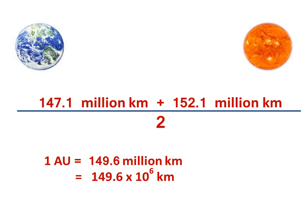Therefore, one astronomical unit is defined as the average distance between the earth and the sun.